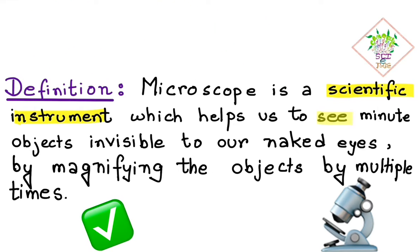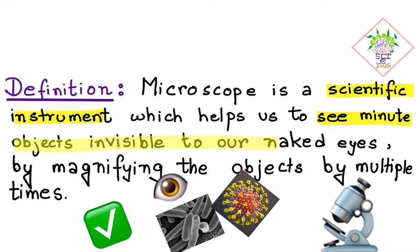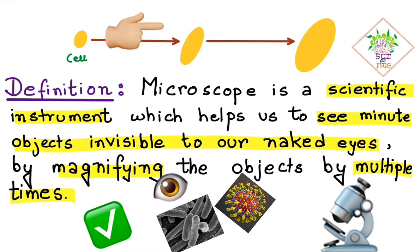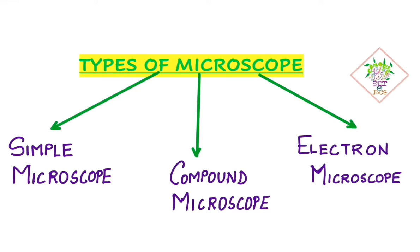Microscope is a scientific instrument which helps us to see minute objects invisible to our naked eyes by magnifying the object by multiple times. When we put any minute object like a cell or a microorganism under the microscope and fix the lens over it, that lens helps to enlarge the image of that object by multiple times, making it visible to our eyes.